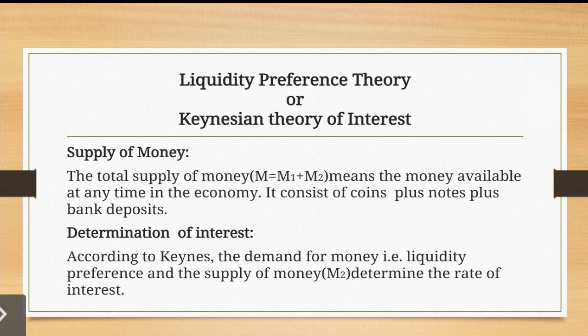The total supply of money M, which equals M1 plus M2, refers to the money available at any time in the economy. It consists of coins, bank notes, and bank deposits. Now we have covered both demand for money and supply of money.